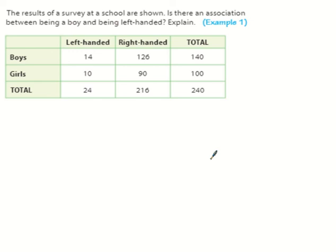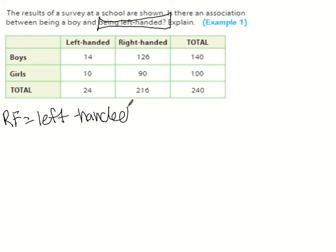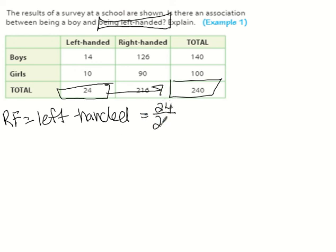Now: the results of a survey are shown. Is there an association between being a boy and being left-handed? We always check the second statement first — being left-handed. The relative frequency of left-handed: 24 out of 240. So 24 divided by 240 is 0.1 — times 100 gives 10%. So 10% of these people are left-handed.